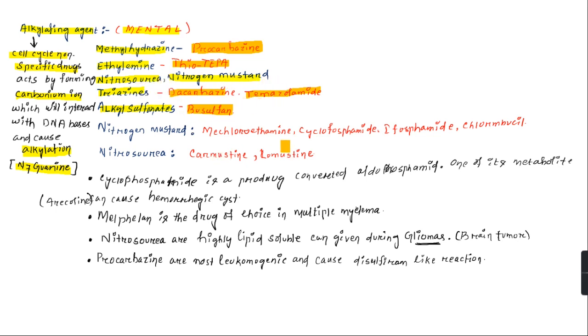In nitrogen mustards, remember MCCI: M for mechlorethamine, C for cyclophosphamide, I for ifosfamide, and chlorambucil. Nitrosourea drugs are carmustine and lomustine. You have to remember that nitrosourea class drugs are highly lipid-soluble, so they can penetrate the blood-brain barrier. That's why they are given during treatment of glioma.